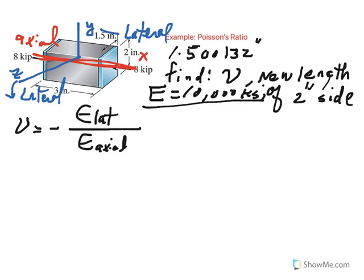First of all, we can find the axial strain by calculating the stress in the axial direction. In the axial direction, sigma is load divided by area. So, the load is 8 kip.